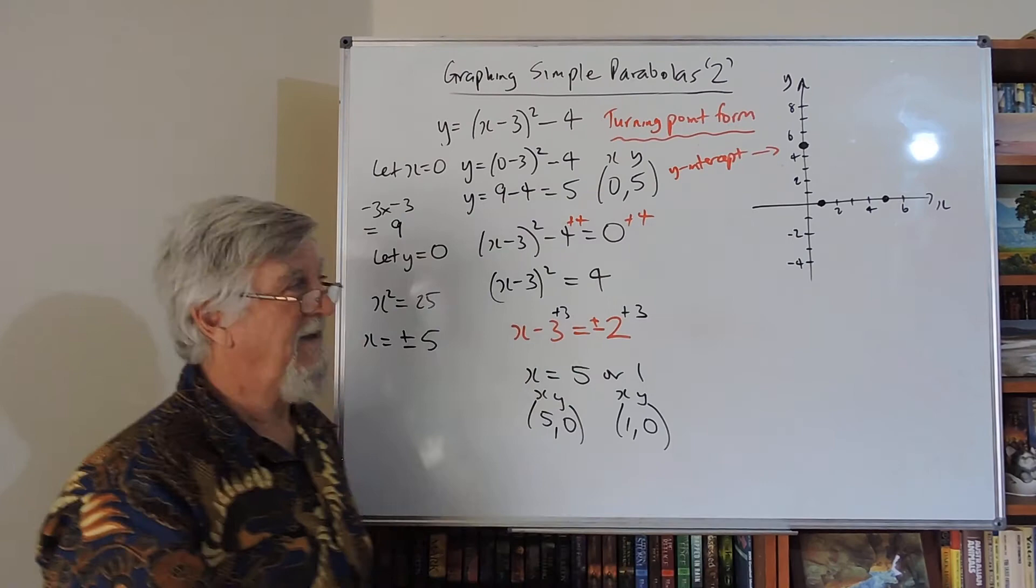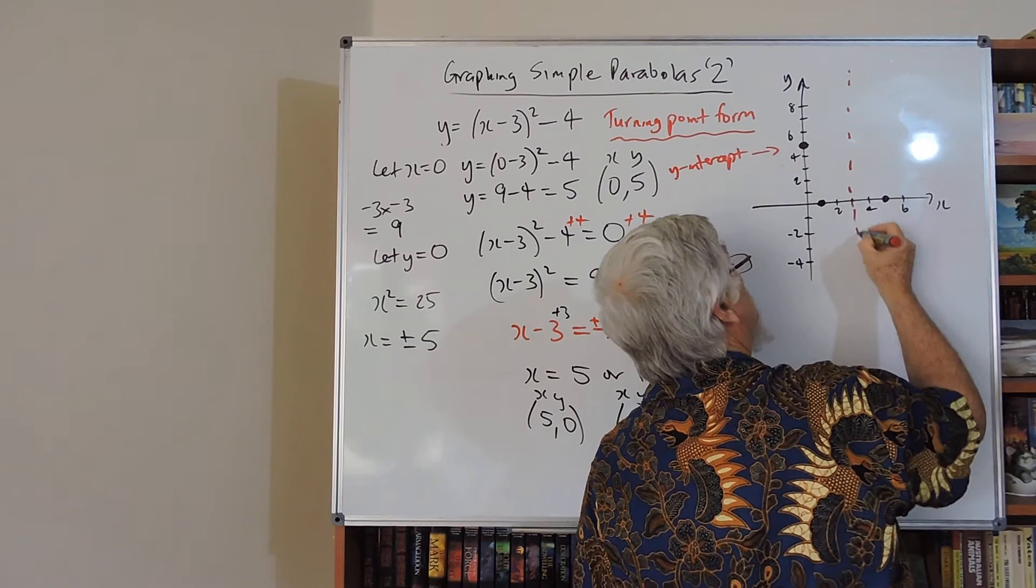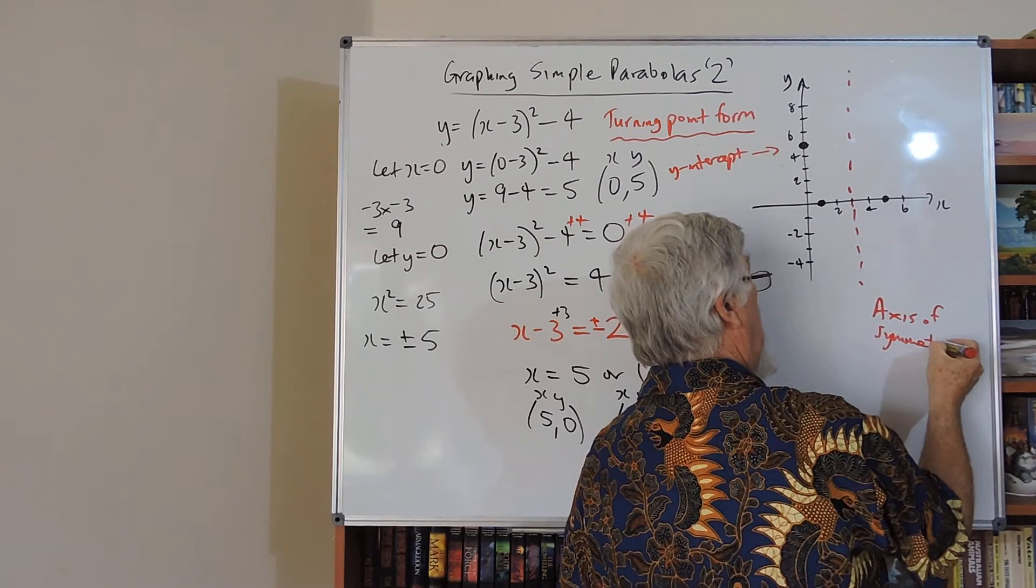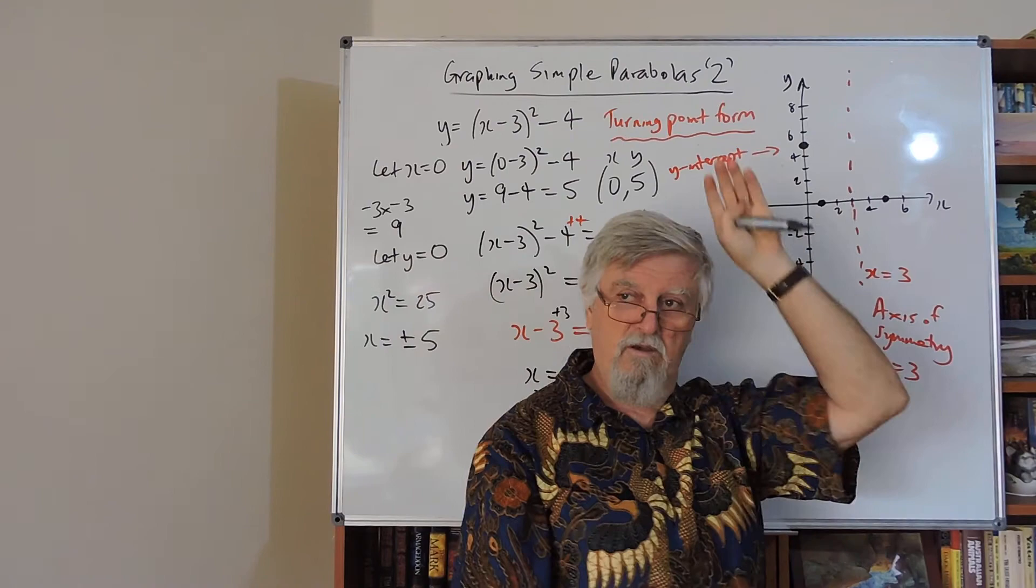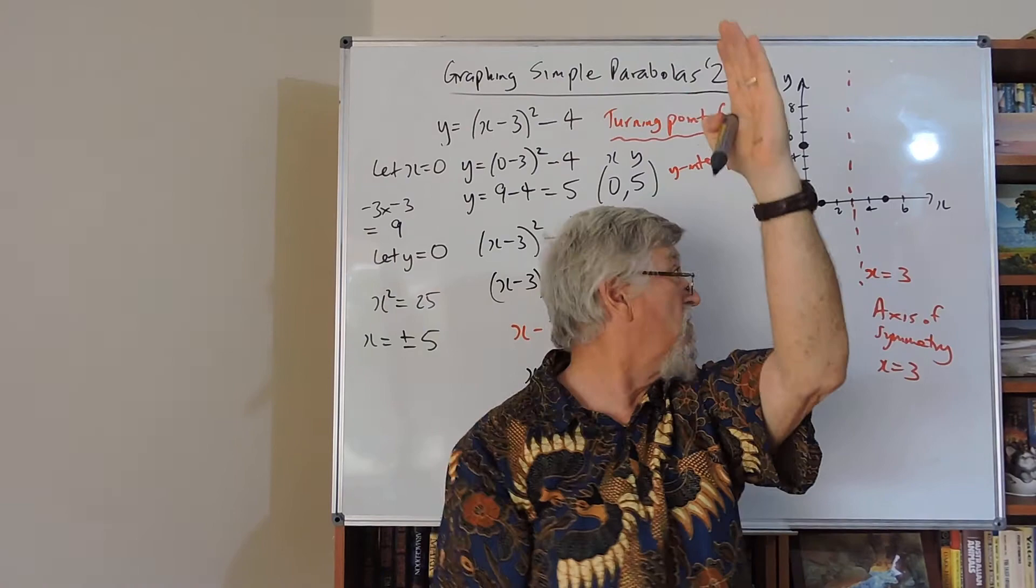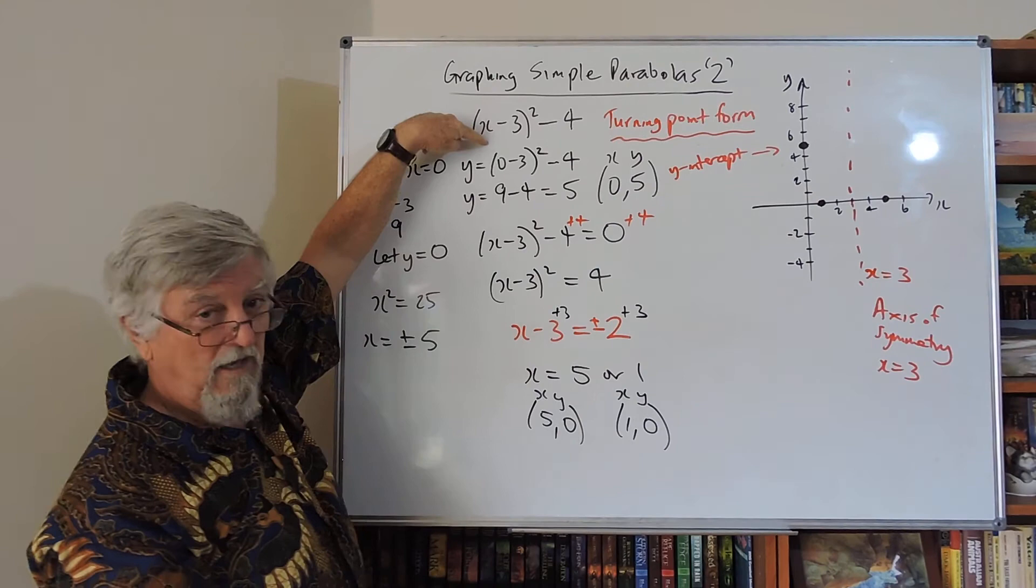Here's the interesting part. Down the middle is called the axis of symmetry. And it happens to be at x equals 3. x equals 3 is the equation of that vertical line. Vertical lines are x equals, horizontal lines are y equals. I tend to nag about vertical lines are x equals. It happens to be the opposite of that there.